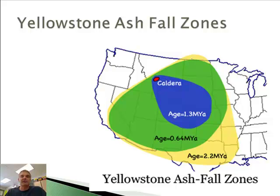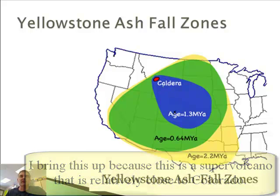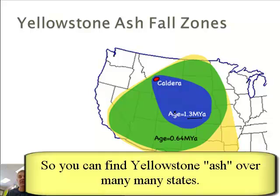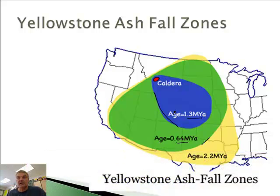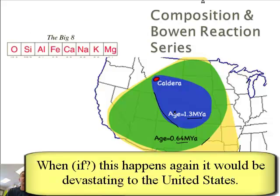Let's talk about Yellowstone briefly. This is the Yellowstone caldera, not too far from us — Colorado is right here. The caldera has exploded different times. 1.3 million years ago it covered a certain area in ash. 0.64 million years ago there was a bigger ash fall that went all the way into Texas. And 2 million years ago, ash fell all the way into Louisiana. This is where the ash fell — unbelievable. We talked about ash falls earlier.